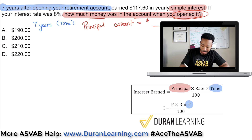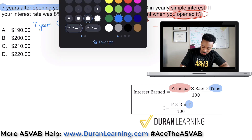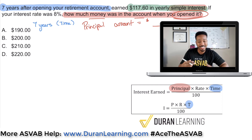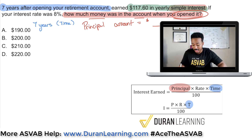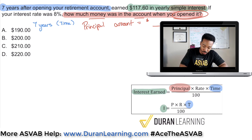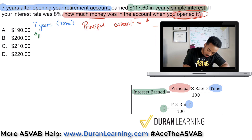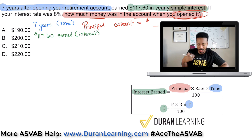Next, we have to look at that $117.60. $117.60 in yearly simple interest — that's what the account earned. So that account earned $117.60. That is the interest earned — that is I, that is the resulting earnings you have here. $117.60 earned — that's the interest that you earned.